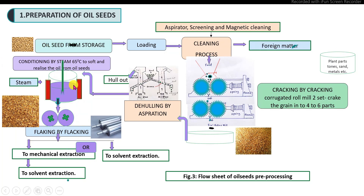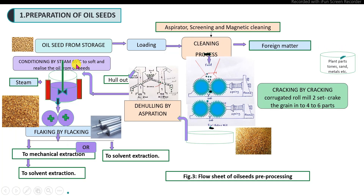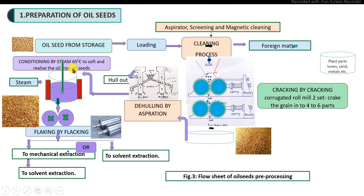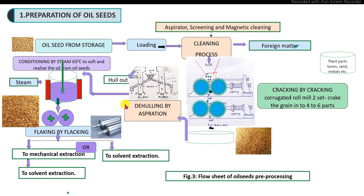The steaming system may use direct or indirect heating with steam, raising the temperature up to 65 to 70 degrees Celsius. This softens the tissue of the oil seeds in order to release the oil during mechanical pressing and the solvent extraction process. After steaming, the next step is the flaking process.